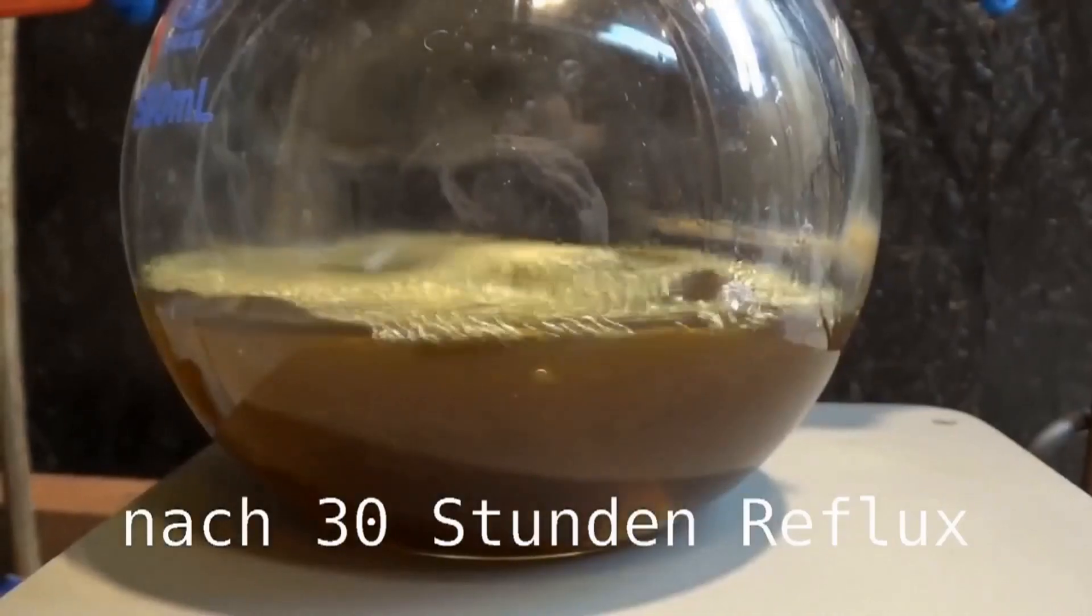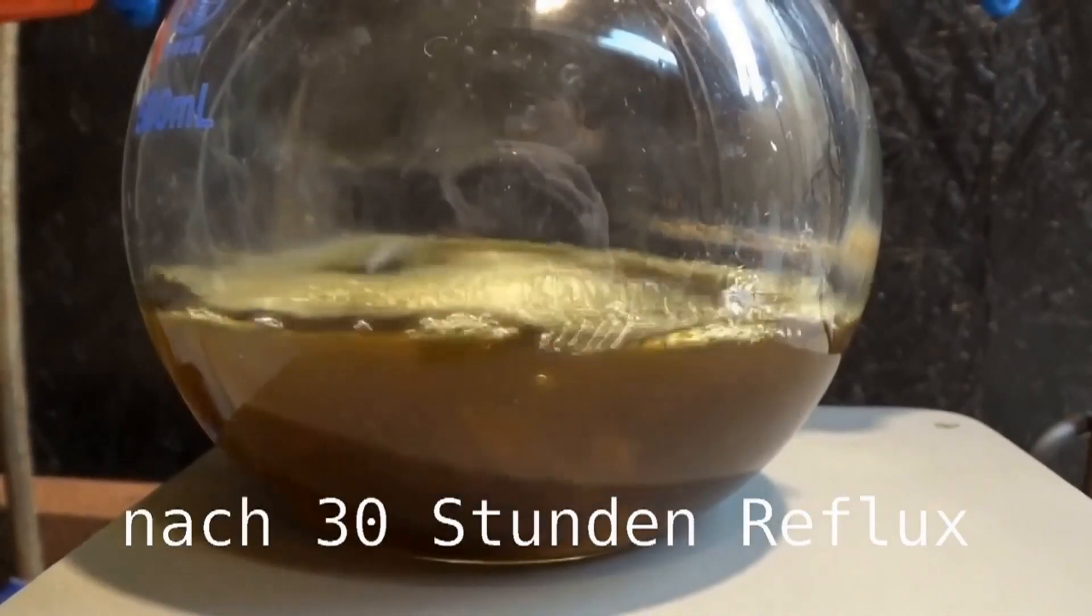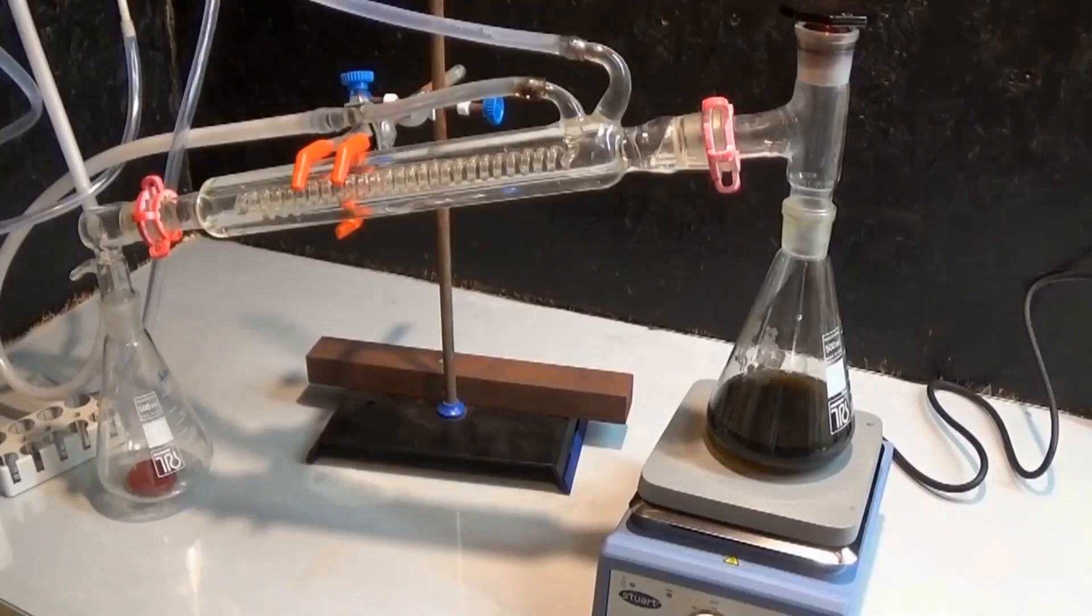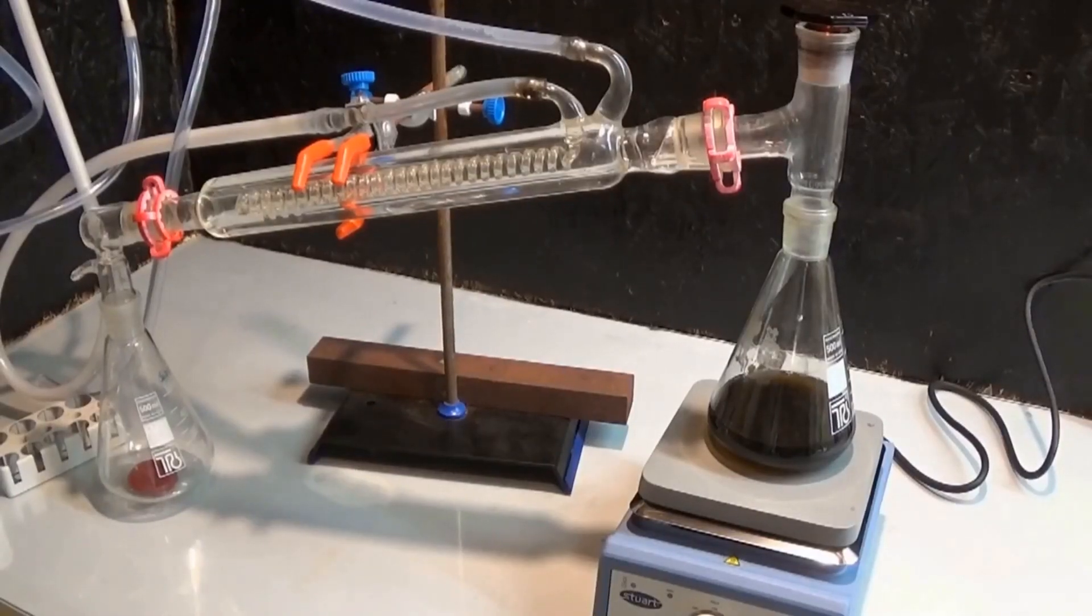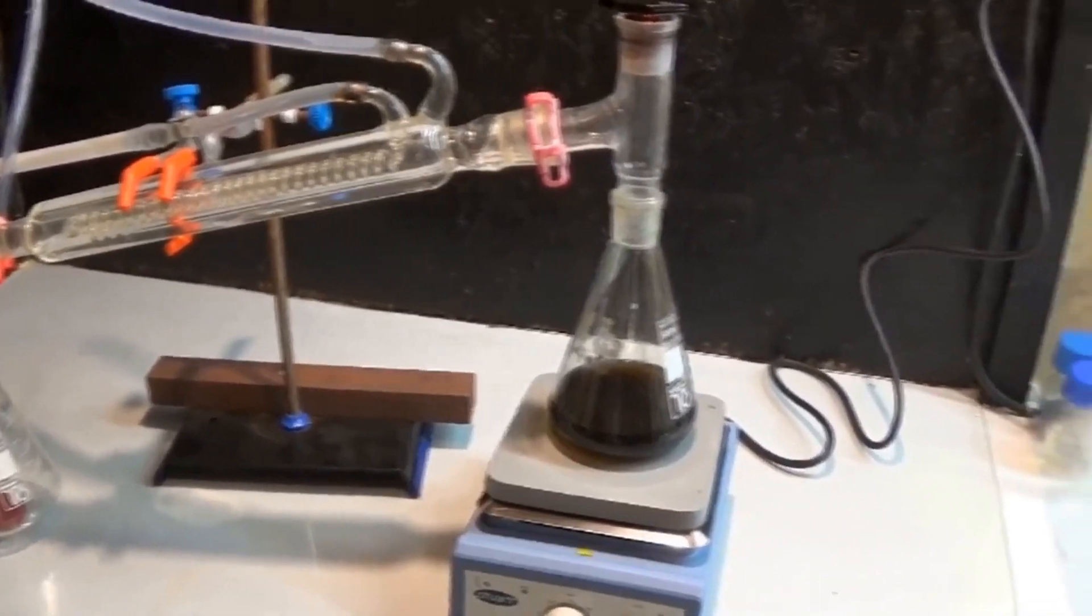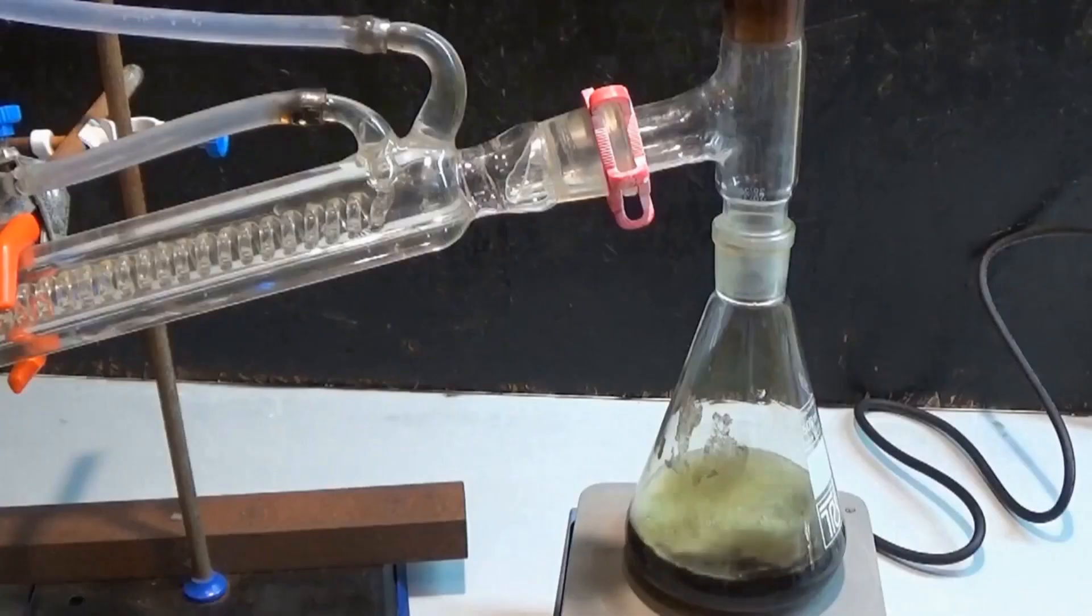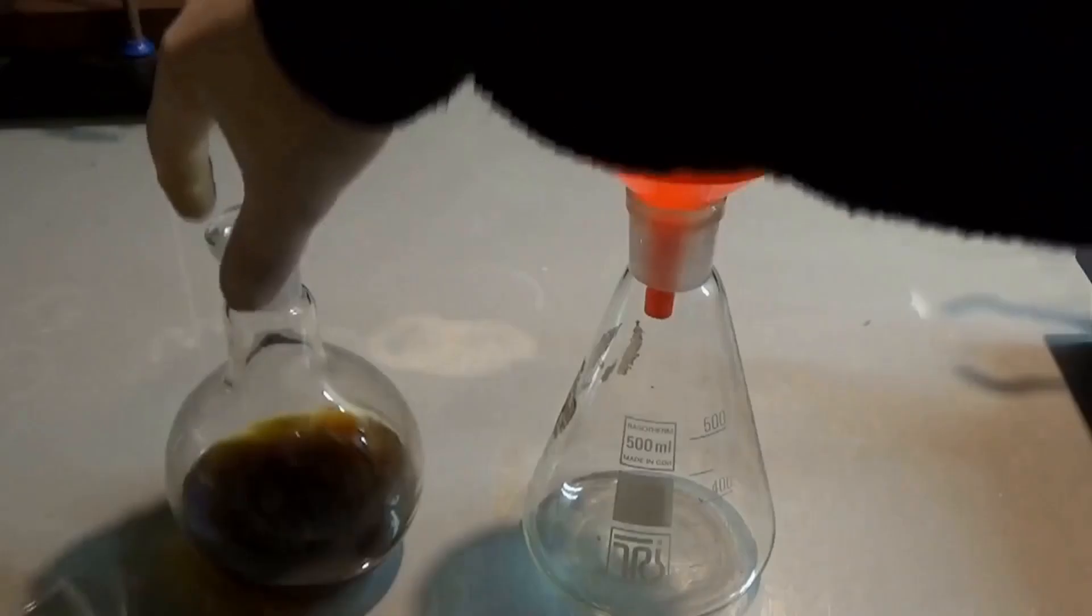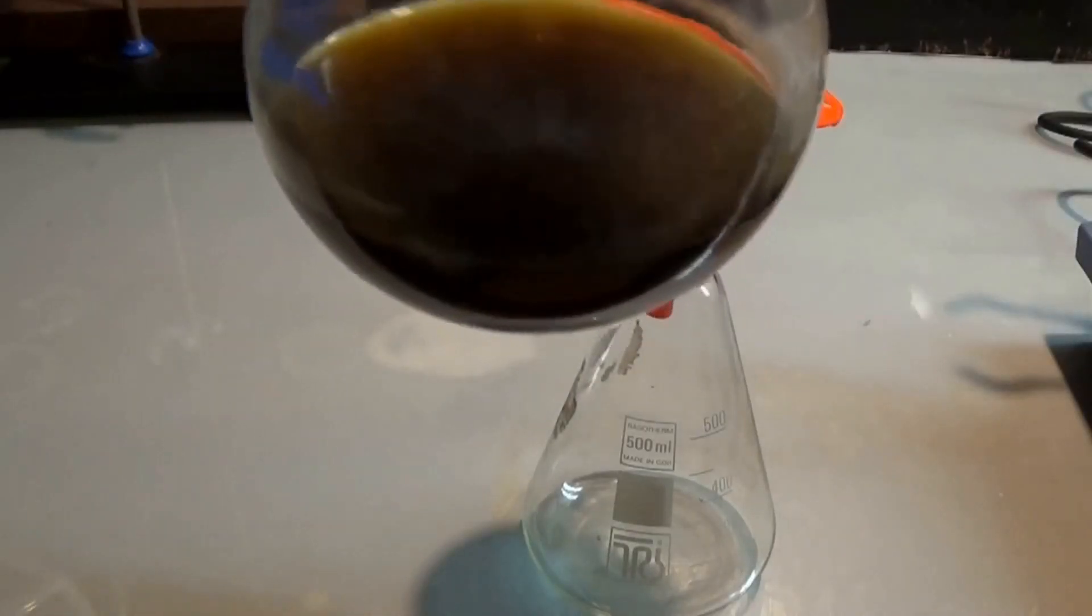Now that we have performed the extraction, it is time to clean up the extract. For this, I transferred the extract into a distillation apparatus and reduced the volume by around 50 percent. This was mainly because ethyl acetate can be hydrolyzed by sodium hydroxide, which we will use in the next step. As a fun chemistry fact, keep in mind that caustic ester hydrolysis is a non-reversible process because the organic acid lacks the proton to reform the ester with the alcohol.